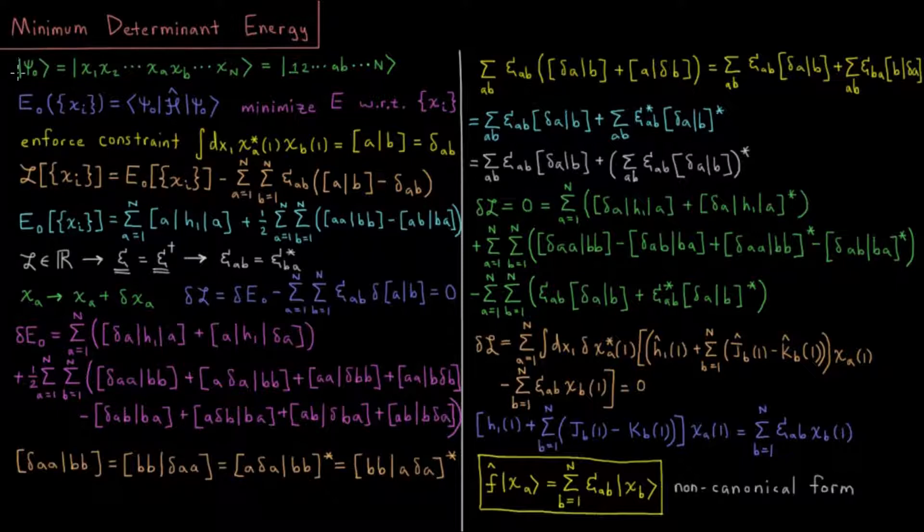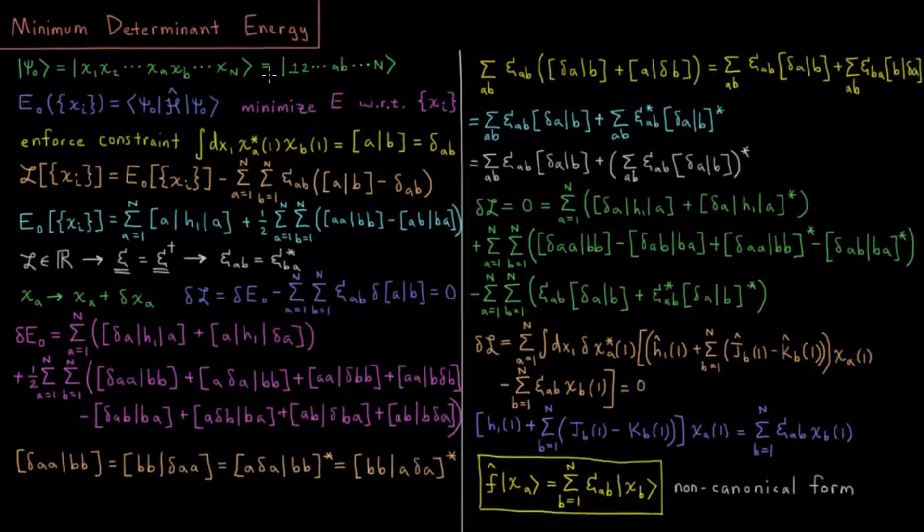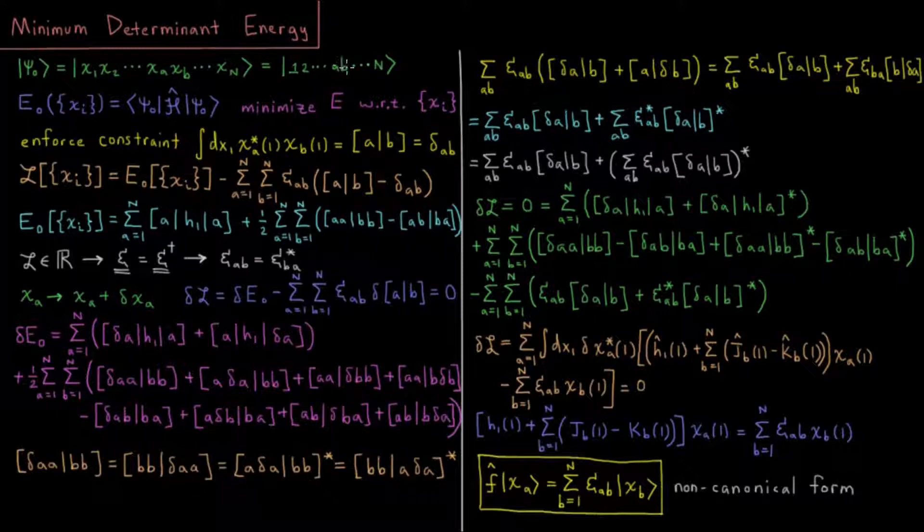We'll start with some wave function, which is a ground state determinant of a bunch of spin orbitals. We have electrons 1 through n and spin orbitals 1 through n, which are occupied in a determinant, something we might indicate in shorthand as 1, 2, all the way up to n. And a and b represent any two particular spin orbitals within those pairs from 1 to n.